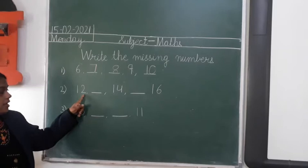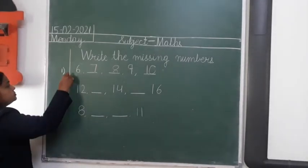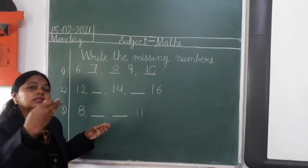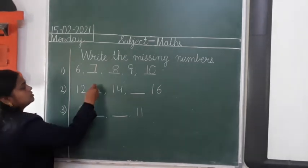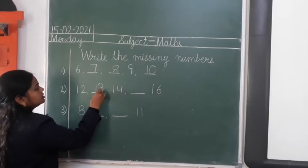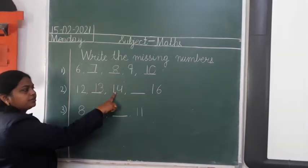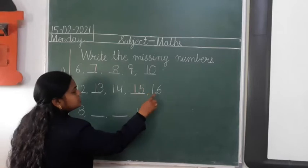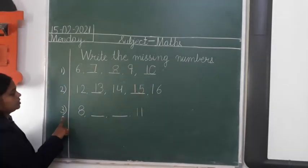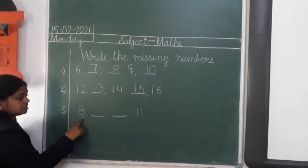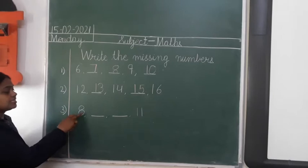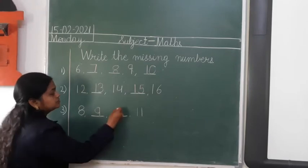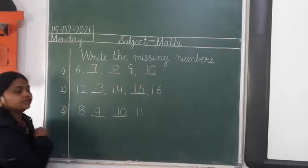Read this number: 12. What comes after 12? 13. I will write next number 13. And next is 14, it is already written over here. 14 and then 15 — next number will be 15. And 16 is already written over here. Now, which number is this? 8. The next number is missing. I will write it here: 8. And next will be 9. And next is 10. 11 is already written over here.